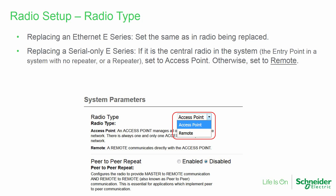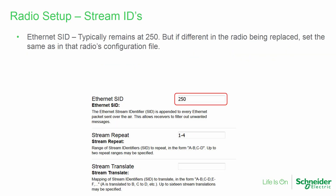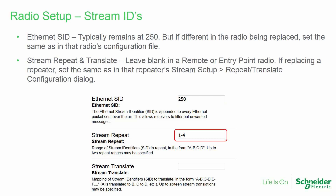If replacing a serial-only E-Series radio, it will not have a radio type parameter. In this case, if the radio being replaced is the central radio in the system, set the type to access point — either the master radio in a system with no repeater, or a central repeater. Otherwise, set the radio type to remote. The peer-to-peer repeat feature must remain disabled unless the radio being replaced is a repeater. Remember that in an Ethernet E-Series system, only one repeater is allowed. The stream IDs are used to route traffic from different ports appropriately. The Ethernet SID typically remains at the default value of 250, but if it is different in the radio being replaced, enter that value. The stream repeat and stream translate entry boxes are only used in E-Series repeaters; leave these blank if configuring a remote. If configuring a repeater, enter the same range as in the original E-Series repeater configuration.